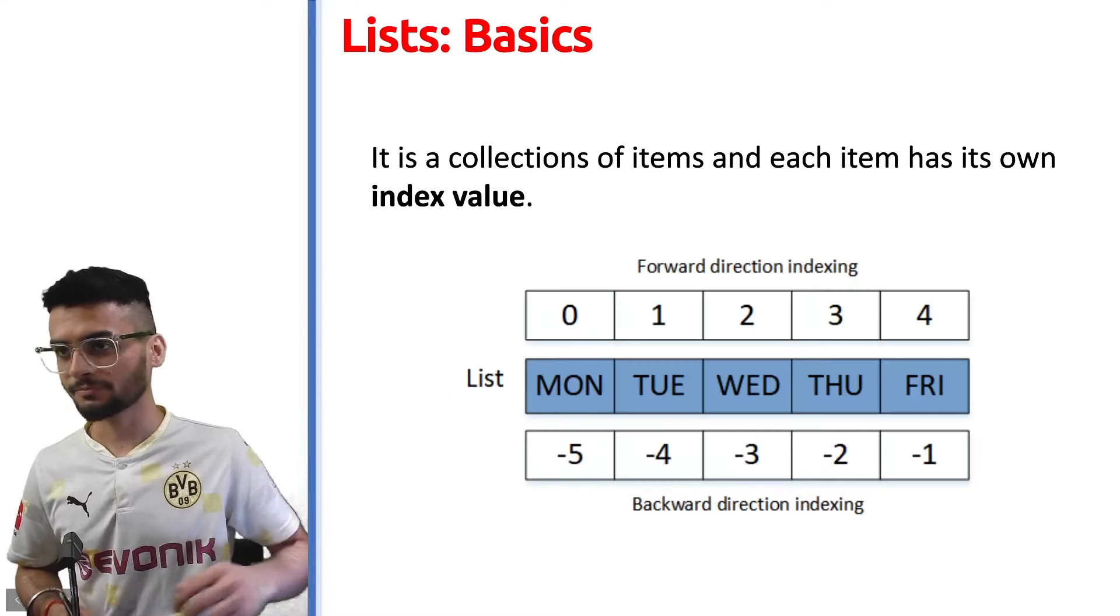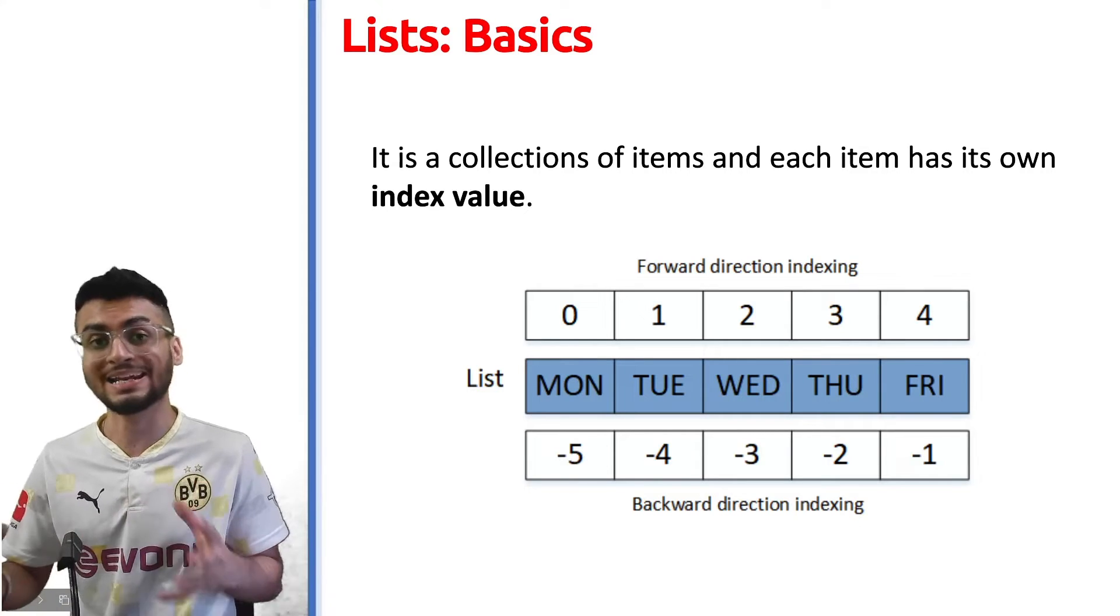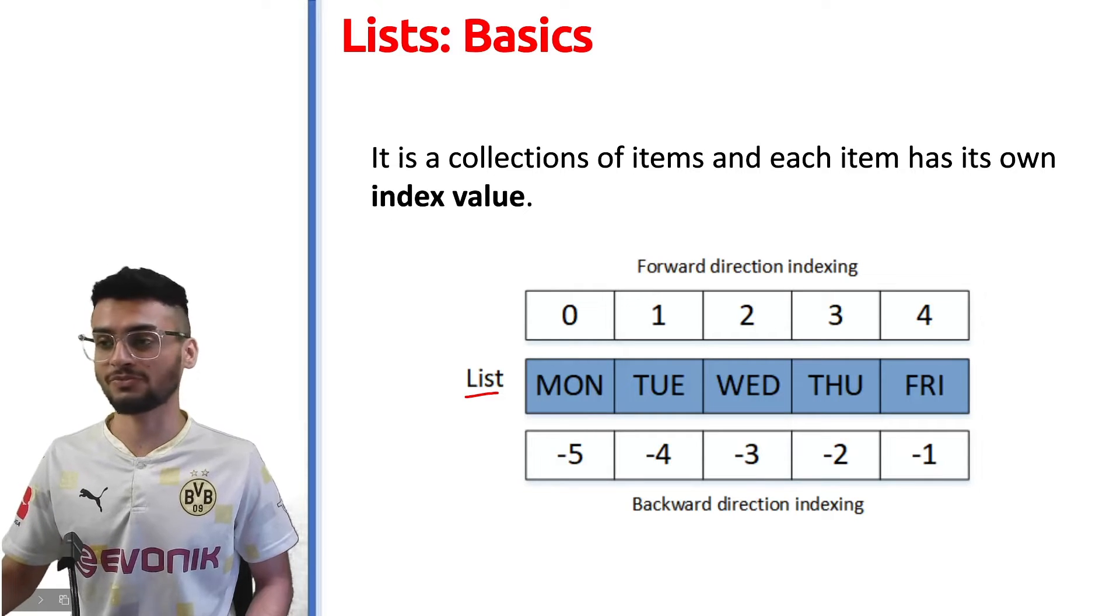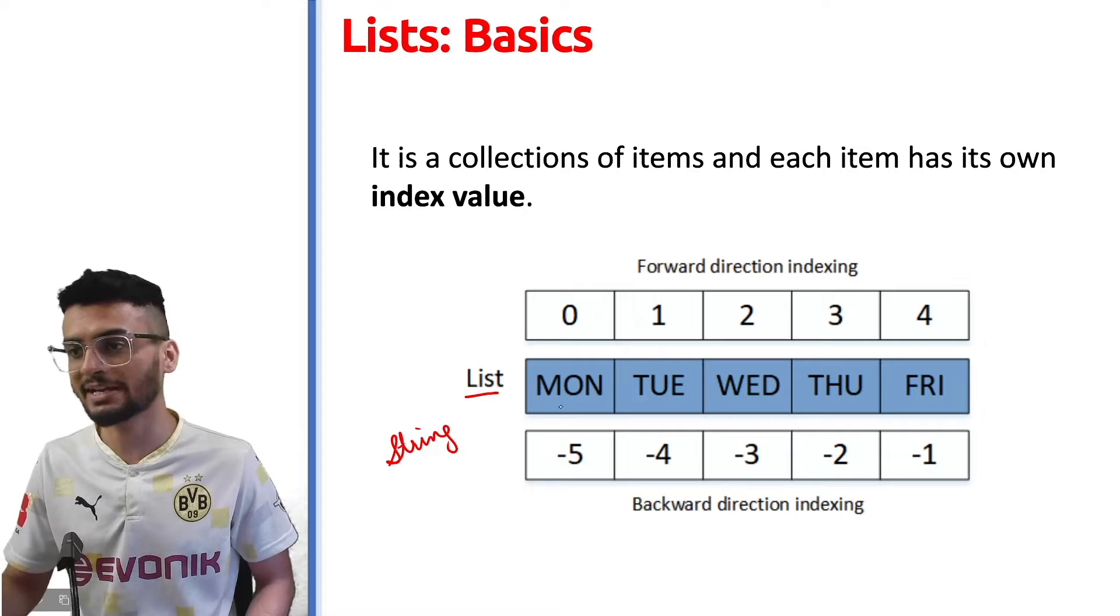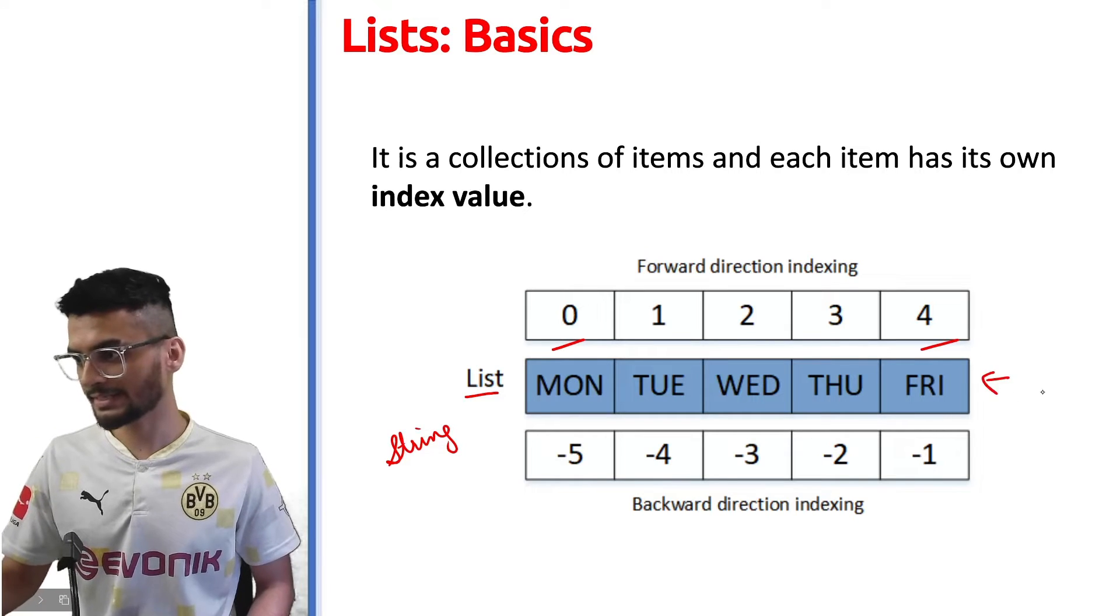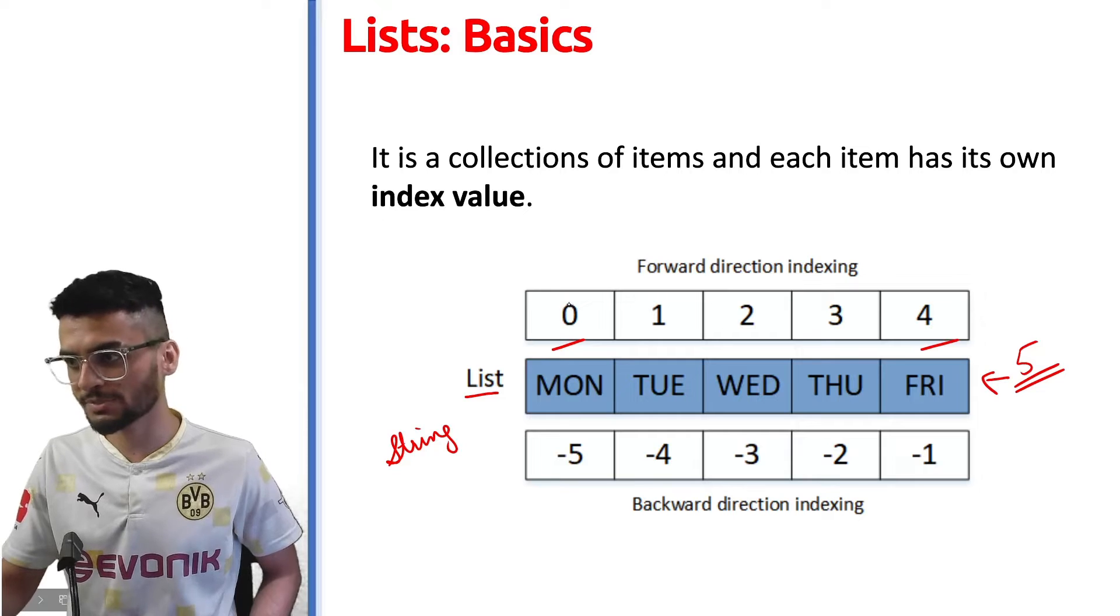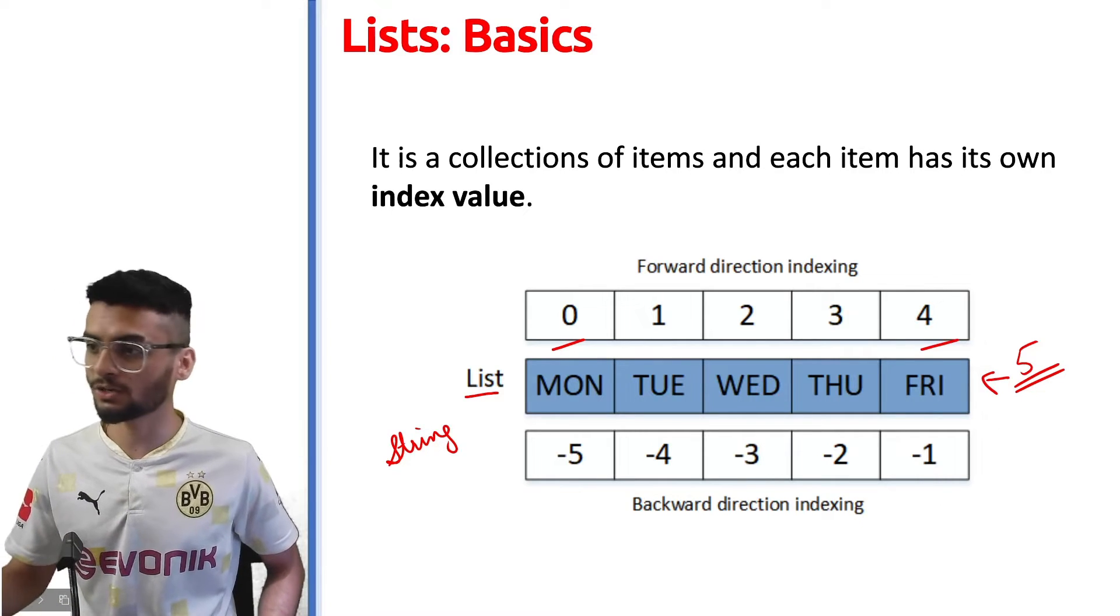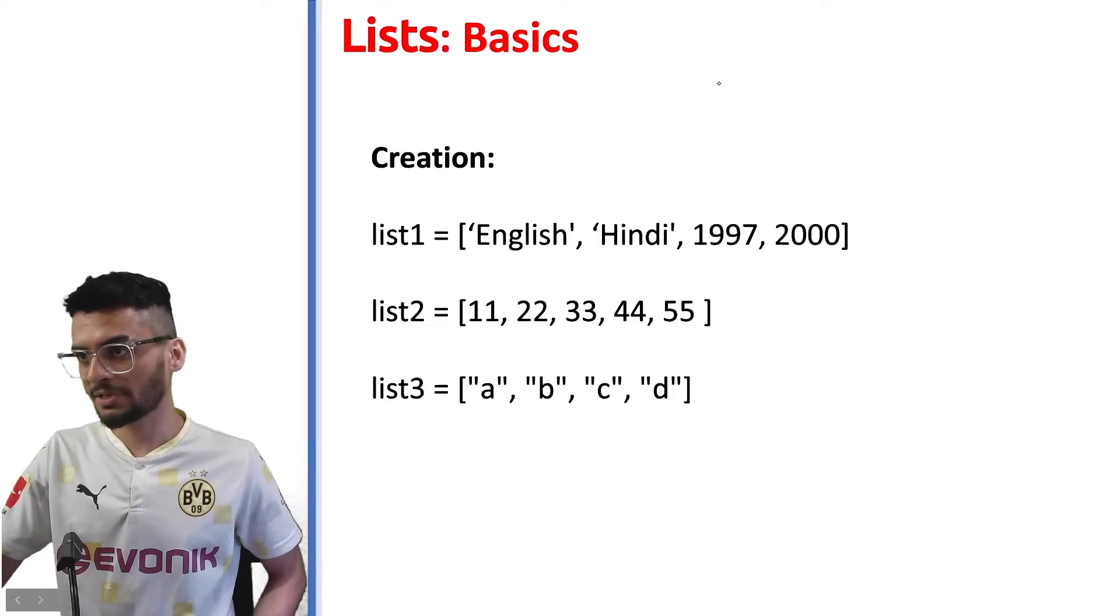For now let's just start with the theory. We saw in data handling what a list is - it is a collection of items. It is about five days of the week, for example. This data type is string if you see. Each list has an index associated, basically every list element which starts with zero and ends at four. So this is the forward direction of indexing.